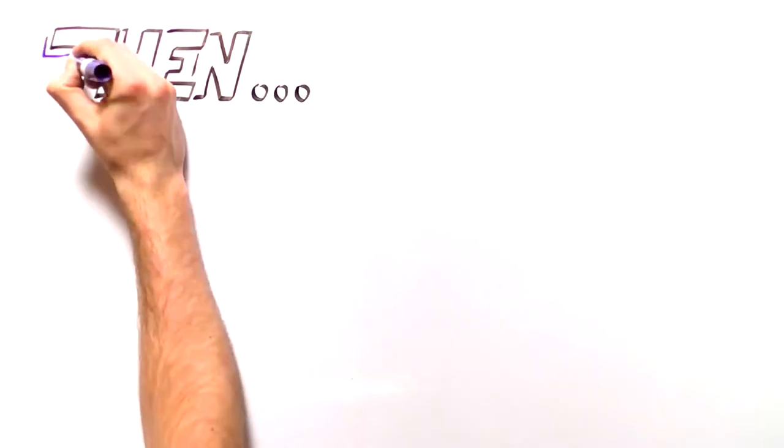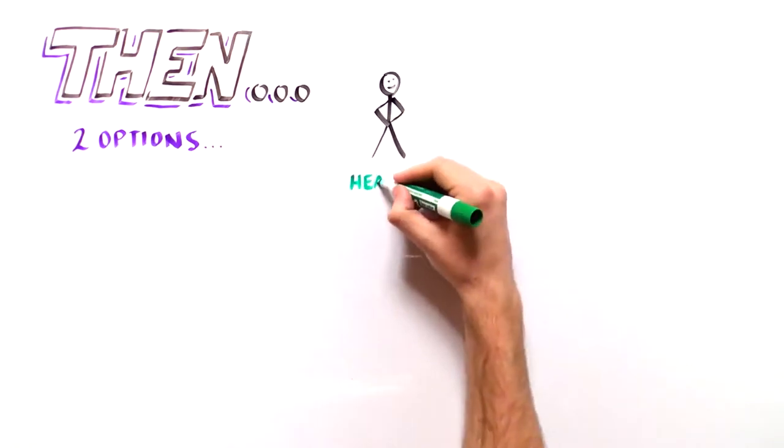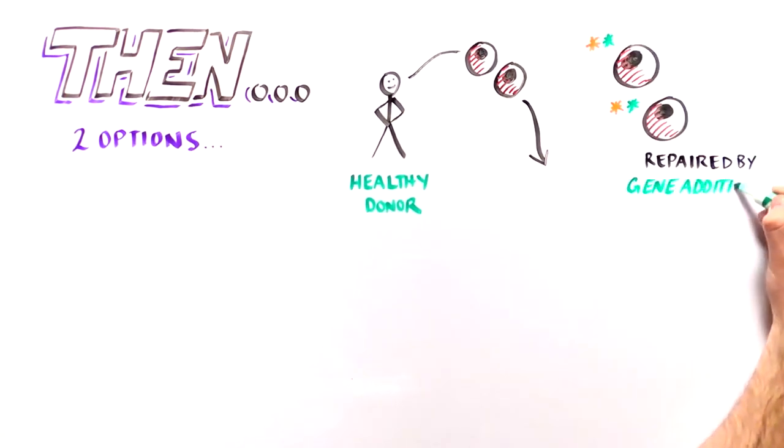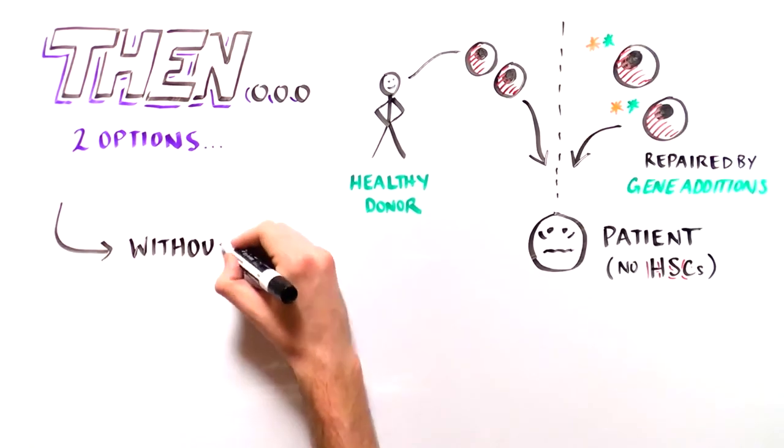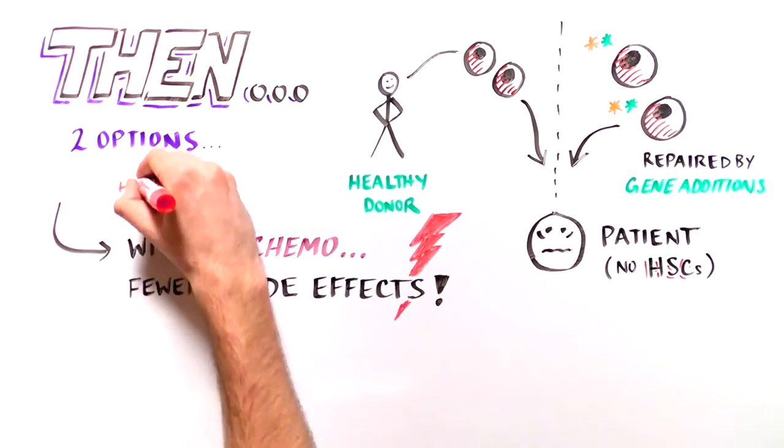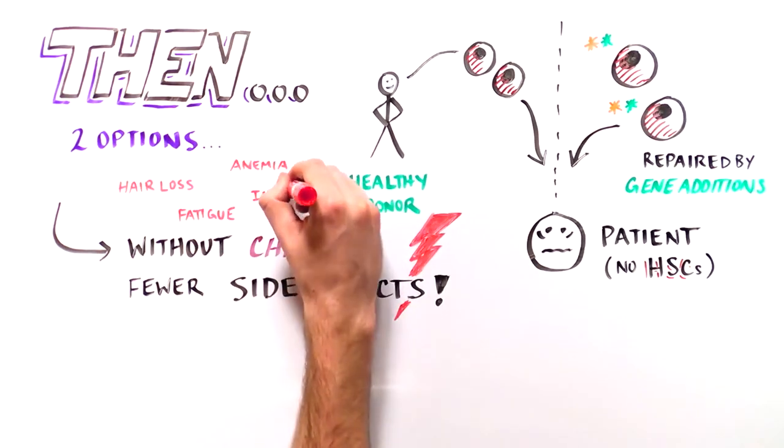Researchers can then transplant stem cells from a healthy person, or HSCs repaired using gene addition, back into the patient. By eliminating the need for chemotherapy before the healthy cells are transplanted, there will be fewer adverse side effects from this treatment.